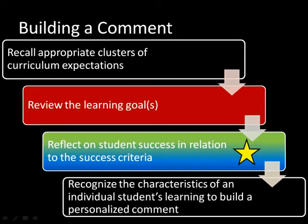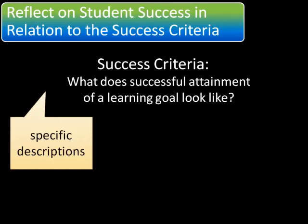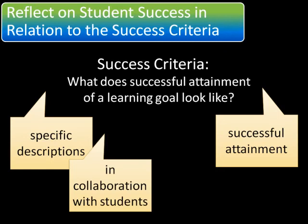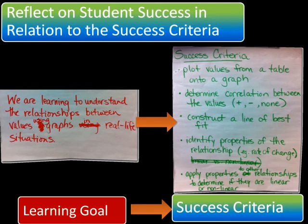We continue the process of building a comment by reflecting on the student's achievement in relation to the success criteria. Success criteria are standards or specific descriptions of successful attainment of learning goals, developed by teachers on the basis of criteria in the achievement chart, and discussed and agreed upon in collaboration with students, that are used to determine to what degree a learning goal has been achieved. Criteria describe what success looks like and allow the teacher and student to gather information about the quality of student learning.